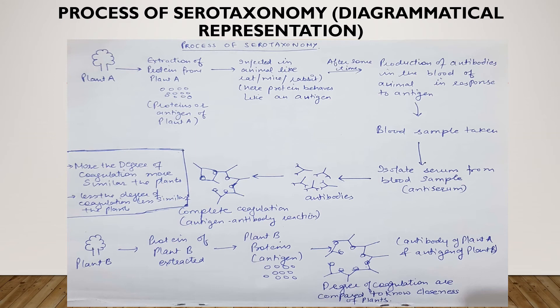For understanding the process of serotaxonomy, we study this diagram. Take plant A. From plant A we extract out the protein — first the protein from plant A is separated out. After that, the extracted protein from plant A is injected into an animal like a rat, mouse, or any other experimental animal. This protein acts as an antigen to that animal. After this, specific antibodies are produced in the animal's body in response to that antigen. Then we collect a blood sample from the animal's body and isolate serum from it. This serum contains antibodies produced in response to the protein from plant A.